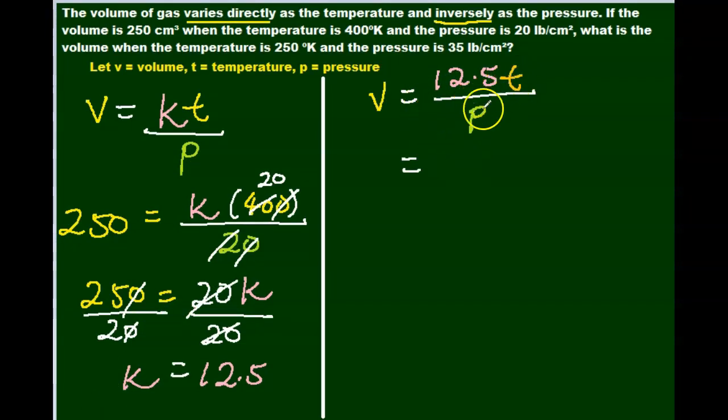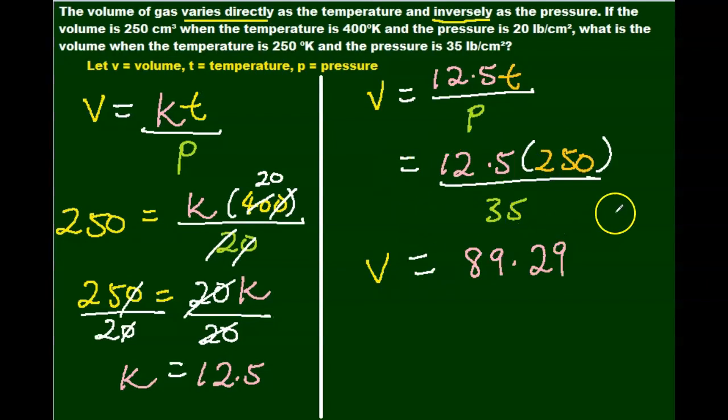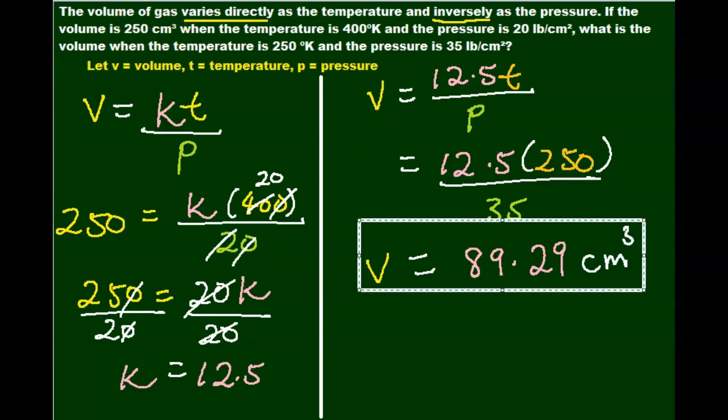Now we want to find the volume when we're given new values of t and p. And our new t is 250, our new p is 35. The answer doesn't result in a nice whole number or decimal number, so I've rounded it to two decimal places, which results to 89.29 centimeter cubed, which is the units for the volume that was given in the problem. The question itself did not tell us how many decimal places we need to round to, so we just round to two decimal places if we're not told anything. So your volume is 89.29 centimeter cubed.